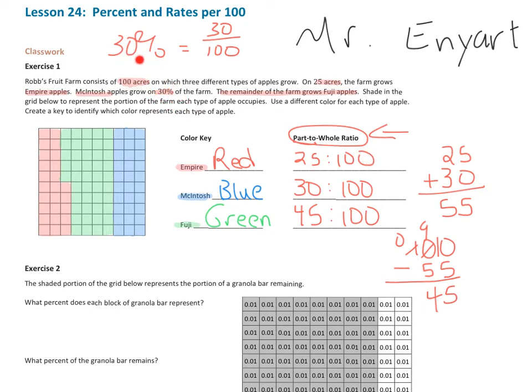A percentage is an amount of something out of 100. So you can think of 30 hundredths would just be 30%. And so in my part-to-whole ratio, I noticed that the first part of my 100-whole ratio is the percentage. Green would be 45%, Macintosh, the blue,